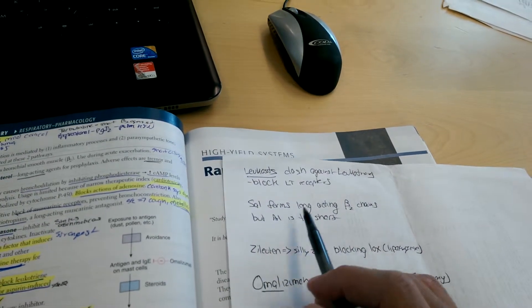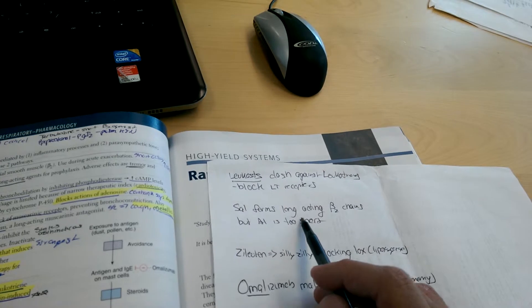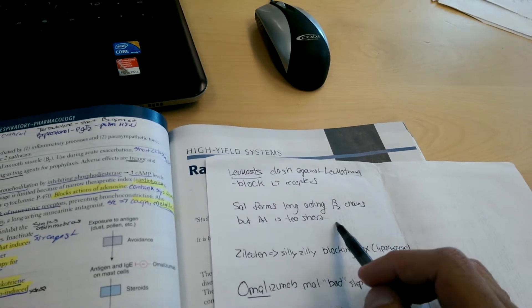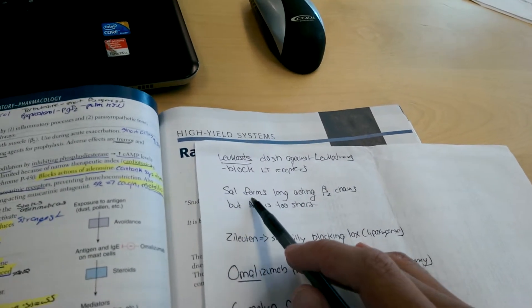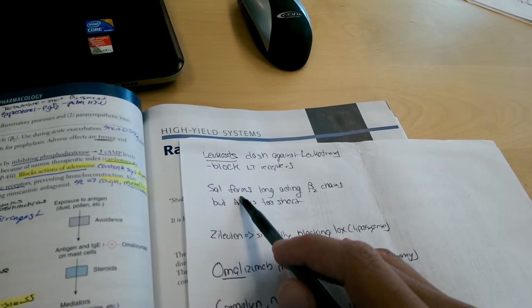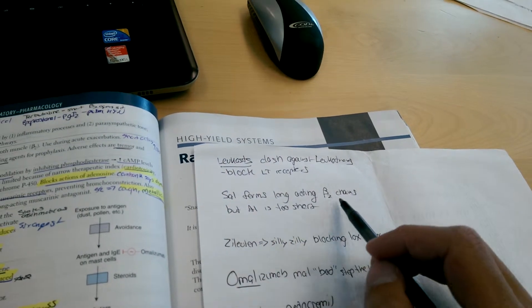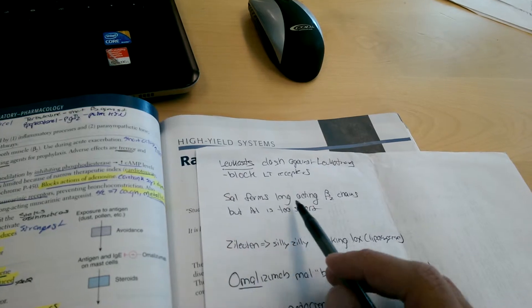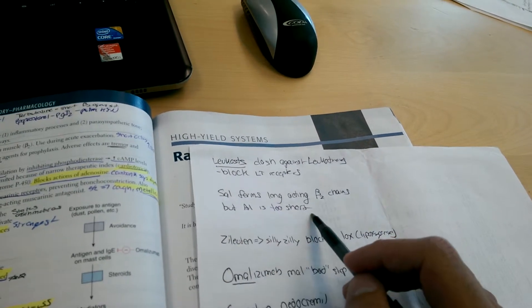Salmeterol. Sal likes to form long bonds, or long-acting beta-2 chains, but AL is too short. So salmeterol and formoterol, yeah formoterol, are long-acting beta-2. Albuterol is short, so Sal forms long-acting beta-2 chains, but AL is too short.